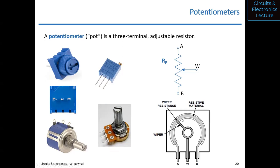Is the resistance adjustable from zero all the way up to the specified value? It is. If you just look at terminals A and W and forget about B, then as you turn the potentiometer knob or screw, you can adjust the resistance between A and W from zero to RP.